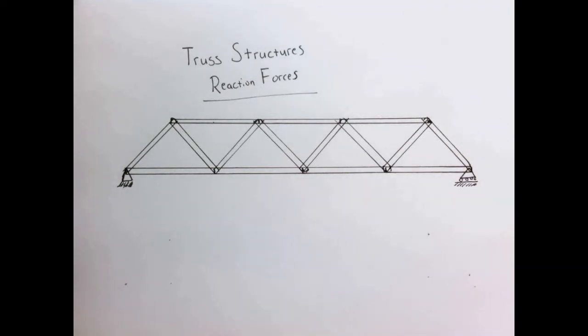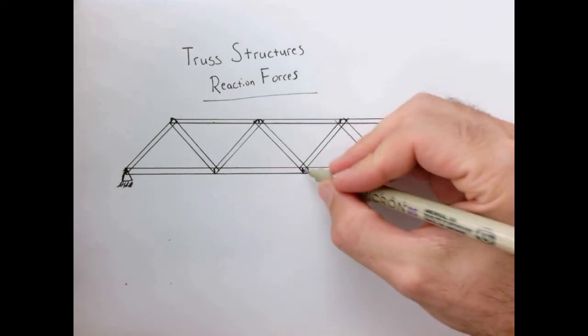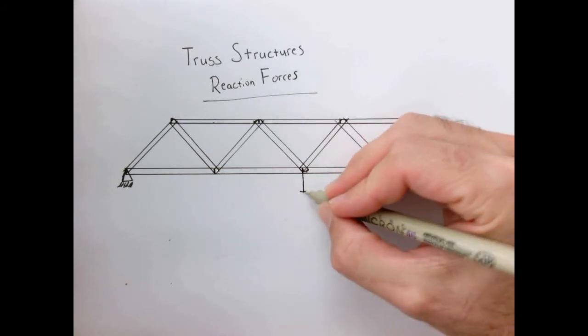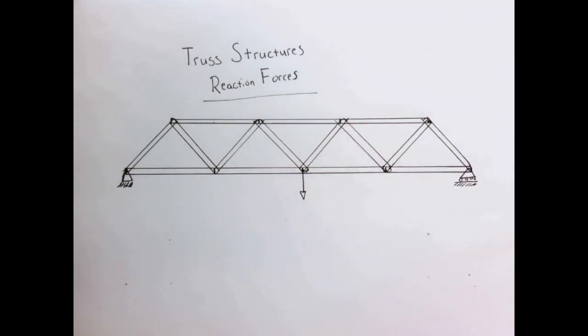So now we're going to move on to analyze truss structures. One of the key things we have to do in these structures is to determine the reaction forces, or the forces of the ground that are holding them in place. Here's a classic truss structure like a bridge, and I'll show you some examples of real life ones later. But for now, let's just take this two dimensional approximation.